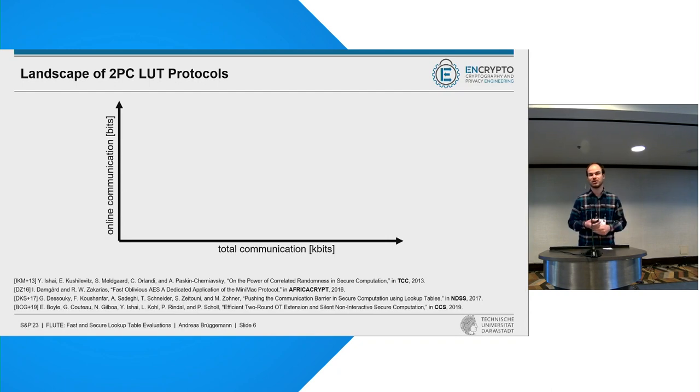Let me give you a short overview over the landscape of existing 2PC lookup table protocols and our work here. On one scale, we have the online communication where our goal is to keep this really low. On the other side, we have setup communication also leading to a much higher total communication, which is the other dimension we want to consider here. So one of the first results is one-time truth tables that have a really low online communication, but at the cost of drastic total communication, rendering it infeasible in many scenarios.